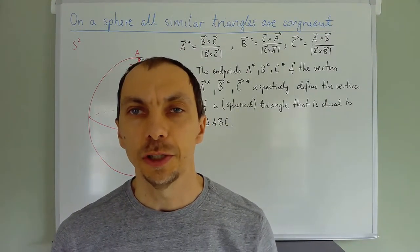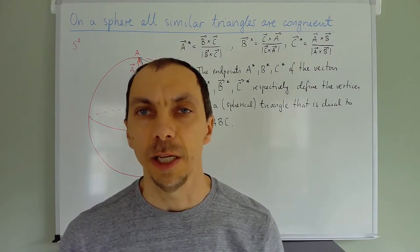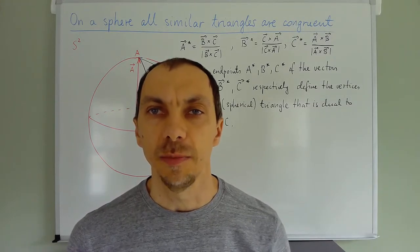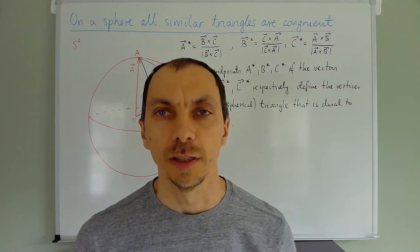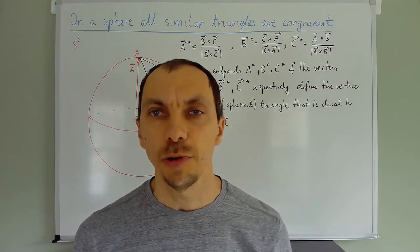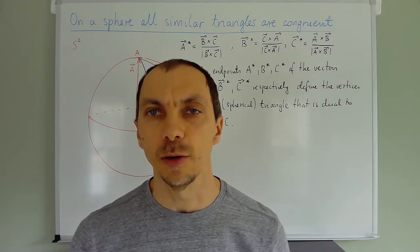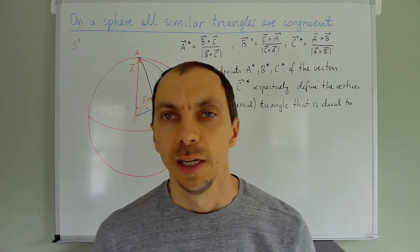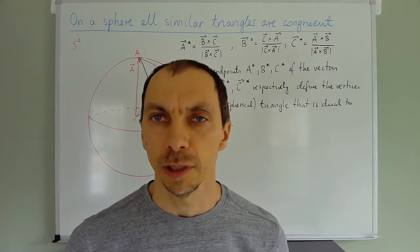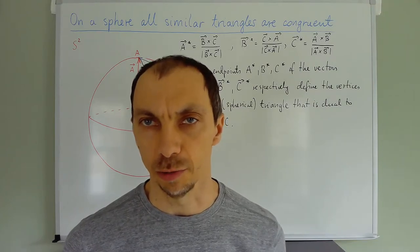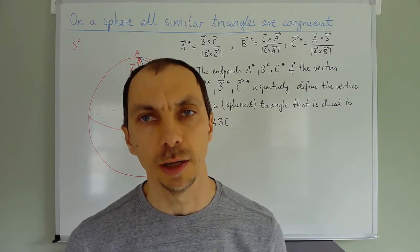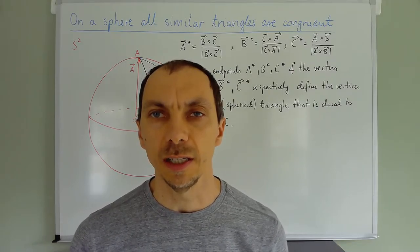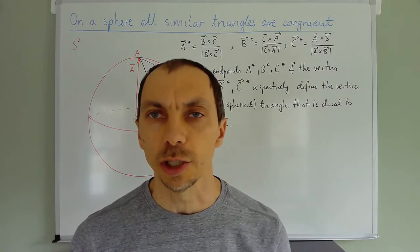Hello. One of the features of planar geometry is the fact that you can have many similar triangles which aren't congruent. You can have many triangles that have exactly the same angles but whose sides are actually different. In particular, you can have a small equilateral triangle or a big equilateral triangle — each equilateral triangle has all angles equal to 60 degrees. However, the sides may be as long as you wish.